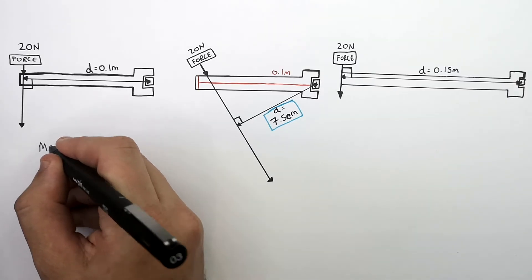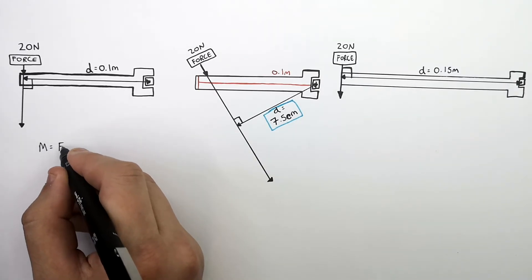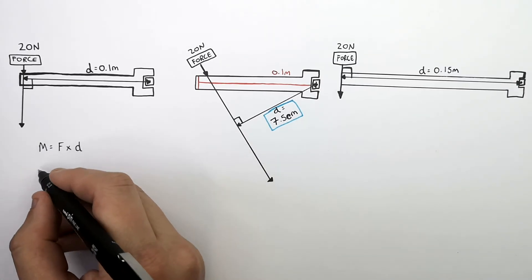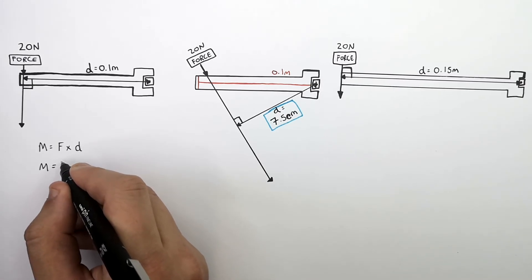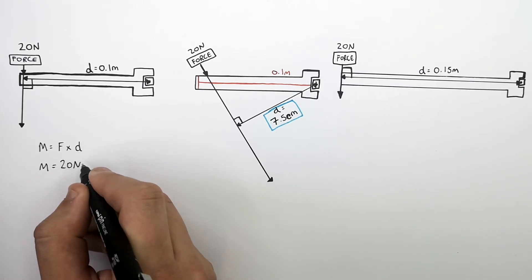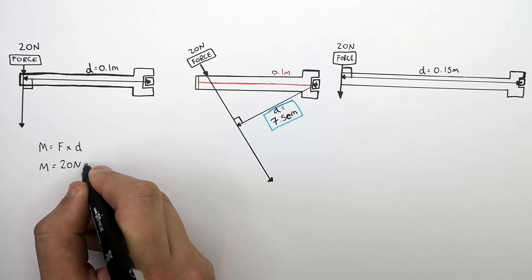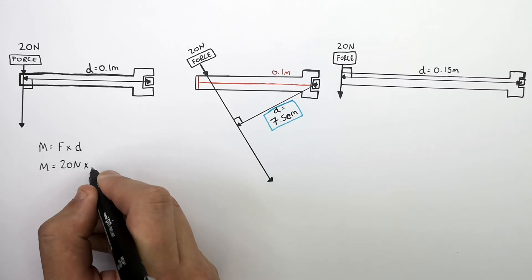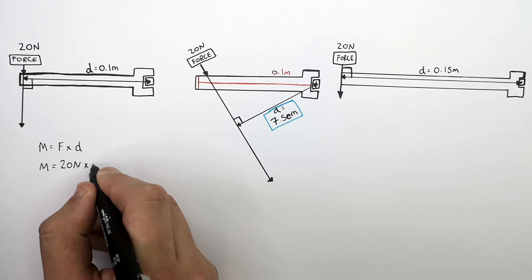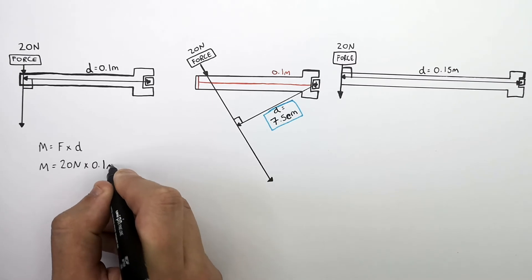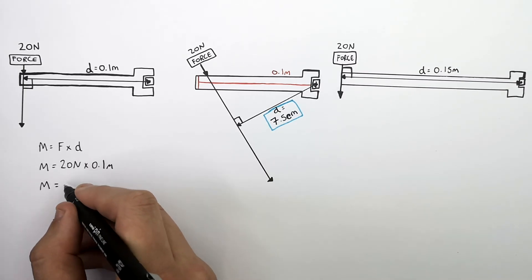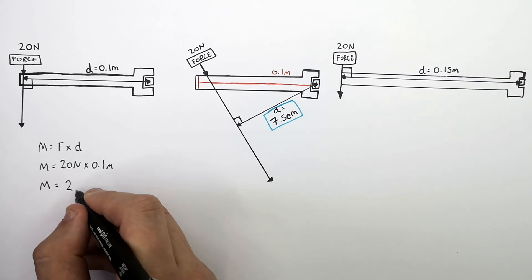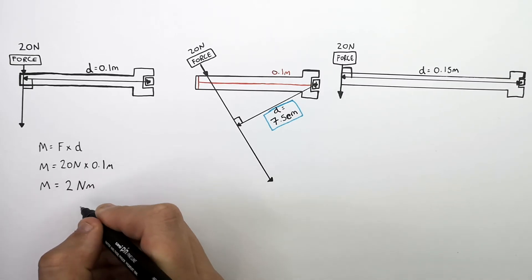Calculate the moment of this force. Recall M equals F times D. The moment equals the force of 20 Newtons. Remember, the distance is the perpendicular distance from the line of action of the force to the pivot, which is 0.1 meters. So 0.1 meters times 20 Newtons gives you a moment of 2 Newton meters.